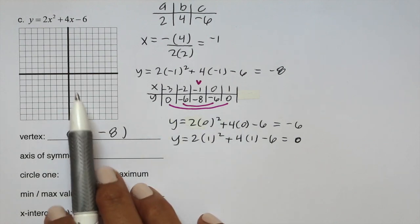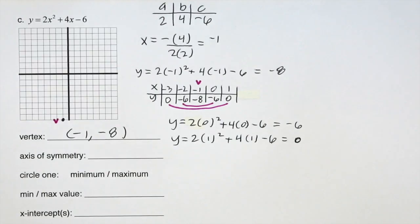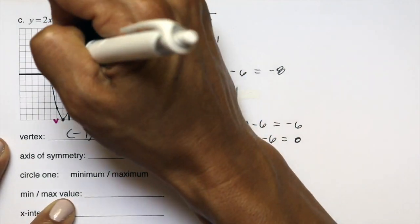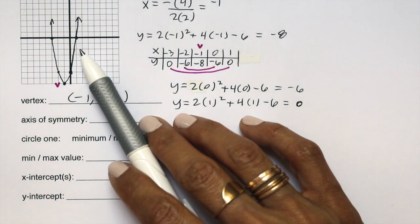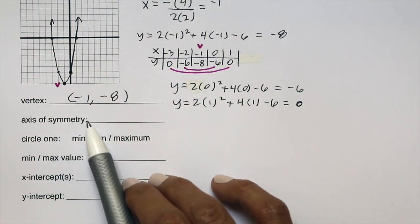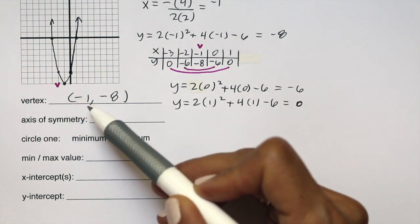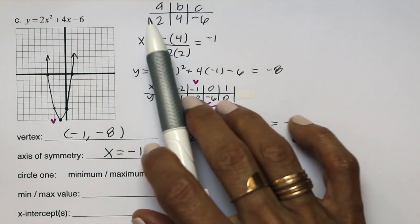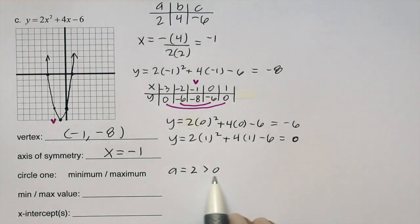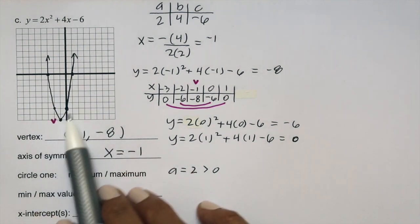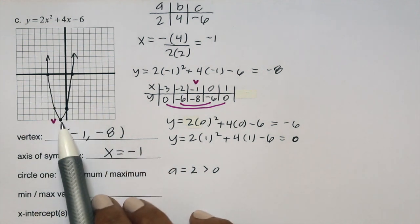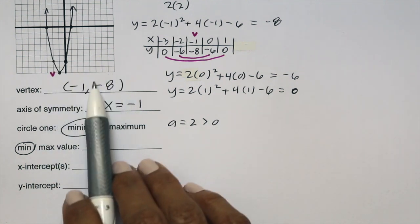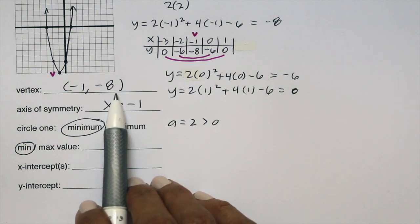On a number line around negative 1, to the right are 0 and 1, to the left are negative 2 and negative 3. Because parabolas are symmetric, plug in only one side. Choosing 0 and 1 since they're convenient. Plotting the points starting with the vertex, there's our parabola. The axis of symmetry is x equals negative 1. Since a equals positive 2, the parabola opens up, giving a minimum value of negative 8 — the y-coordinate of the vertex.